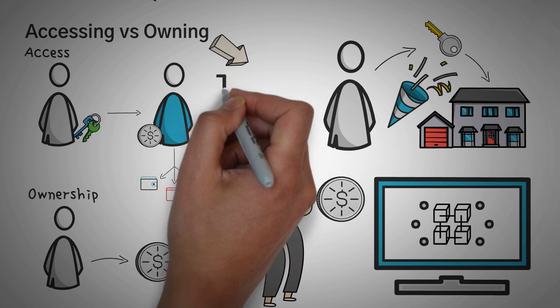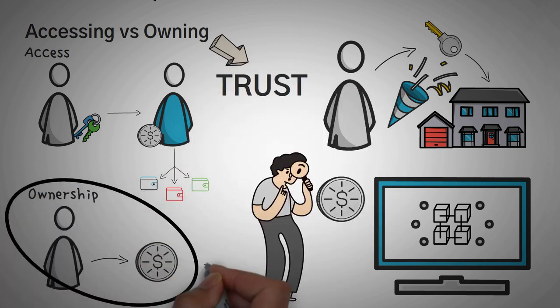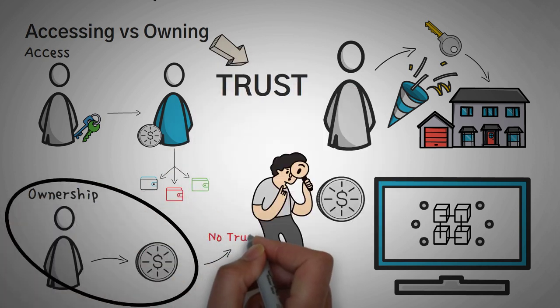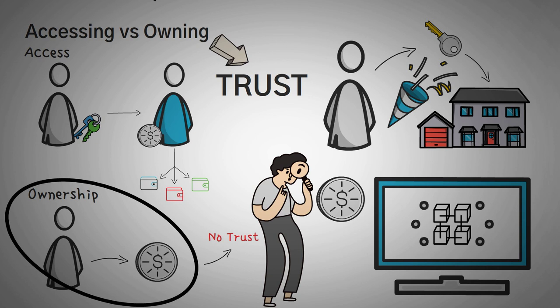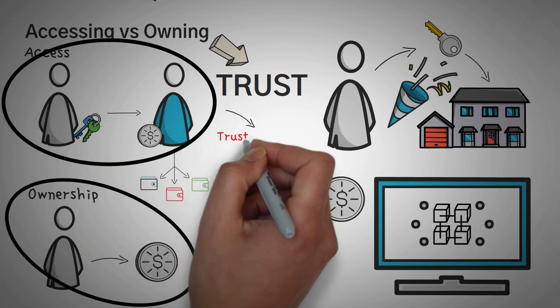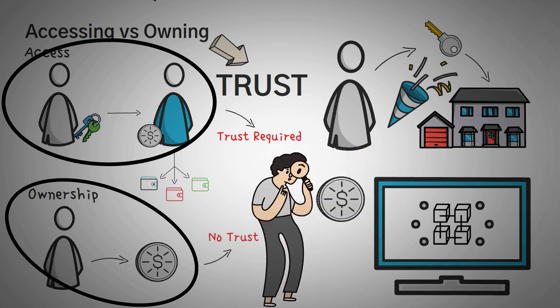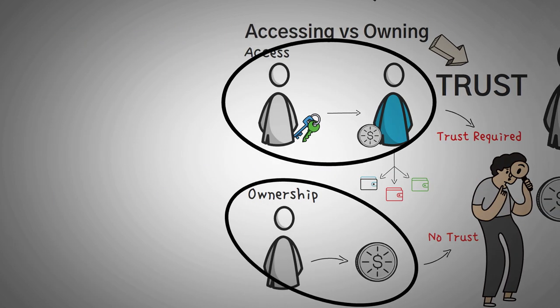The difference between accessing and ownership is trust. With ownership, you don't have to trust anyone — you are the only person who can access those funds. If you share your private keys, you have to trust that other people aren't going to steal them. This is why it's important, and now we're going to get into one of the major hacks in cryptocurrency of all time.